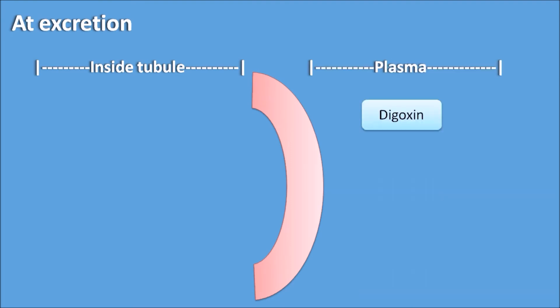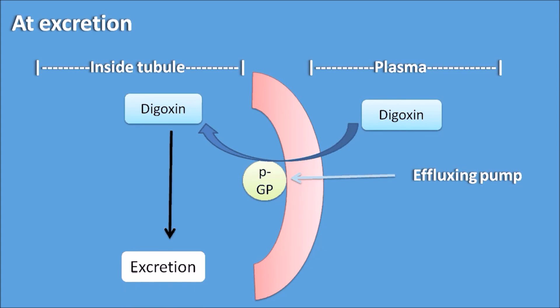Now let us see the excretion phase. Consider this is the section of the renal tubule and this is the inside of the renal tubule and this is the plasma. Now the digoxin present in the plasma can be secreted into the renal tubule by one of the pump, P-glycoprotein. P-glycoprotein is an efflux pump, it always increases the secretion of the drugs out of the plasma into the renal tubules, and whenever the drug digoxin is present inside the renal tubule, it can be excreted out of the body.